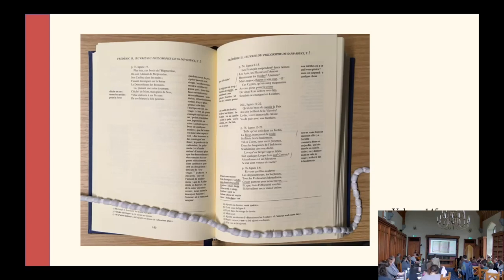Linked open data can then be used to create pages providing key bits of information at a glance — for example, of each work by Voltaire, for people and events mentioned, and for works by other people that are cited. These would serve as miniature hubs within the resource, giving an overview of each work, person, and place, and allowing users to navigate between works in new ways.